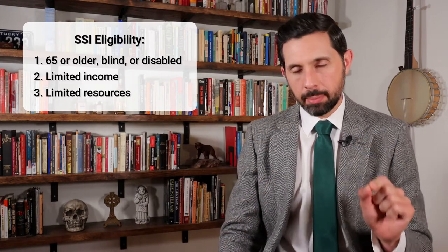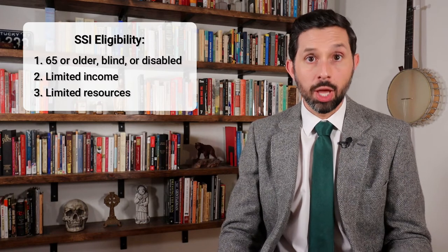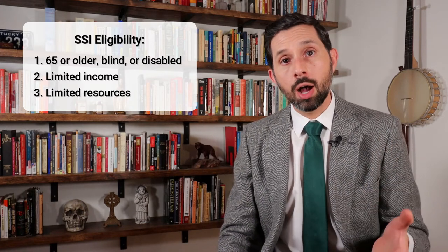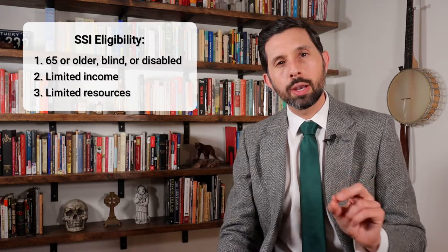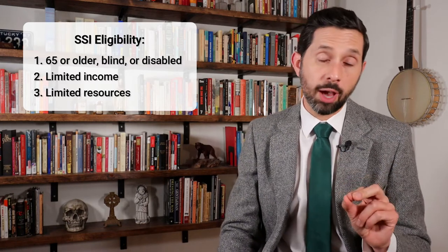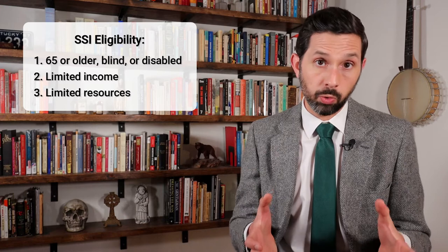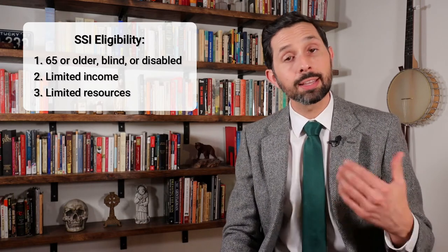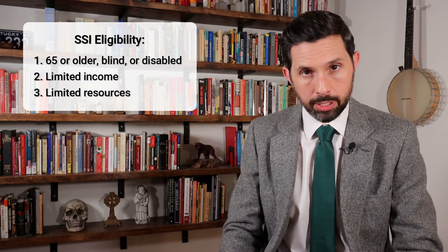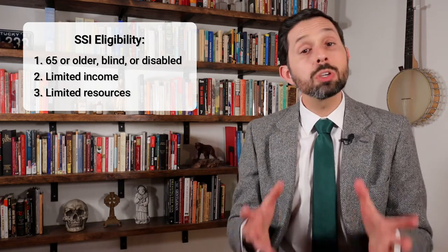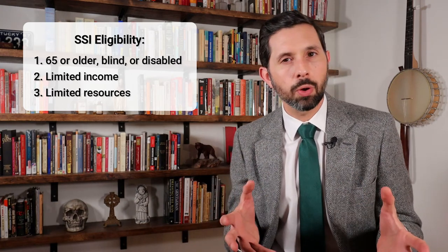To get benefits, you must also have limited resources. Resources are things that you own that you could sell to pay for food and shelter. This includes savings, stocks, bonds, land, life insurance, and certain personal property. The resource limit in 2021 is $2,000 for an individual and $3,000 for a couple. However, there are lots of resources that the SSA does not count toward this limit, including the home you live in and the land it's on, household goods and personal effects, and one vehicle you use for transportation. Like with income, counting your resources can be complicated, so if you think you might qualify, I recommend applying, and the SSA will help you figure it out.